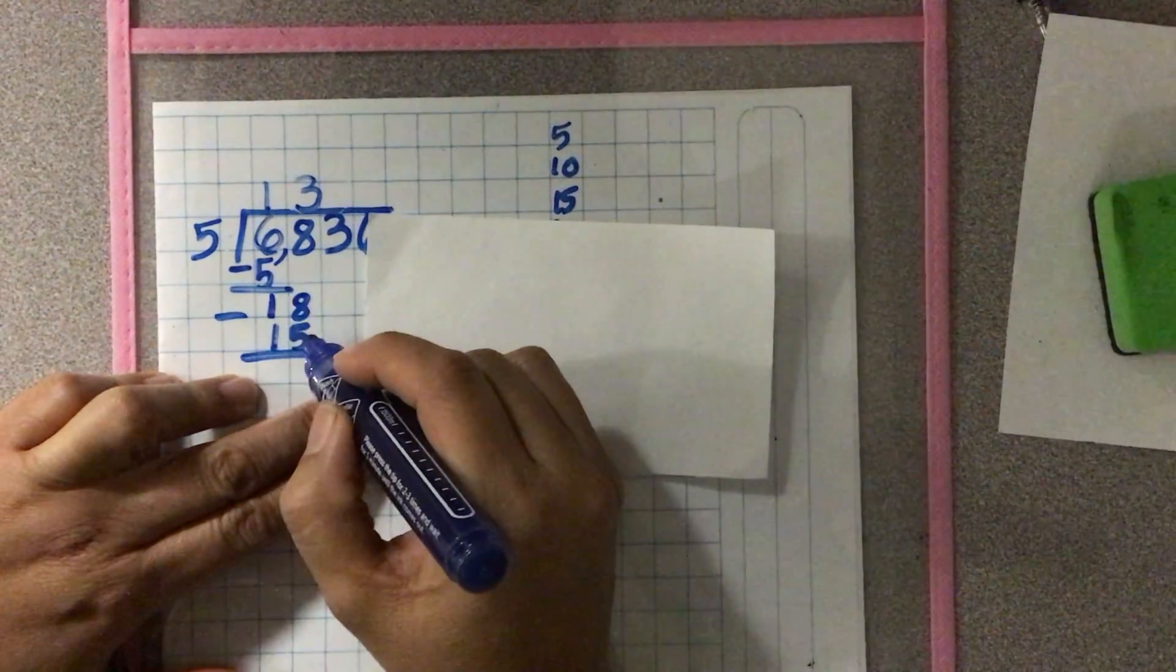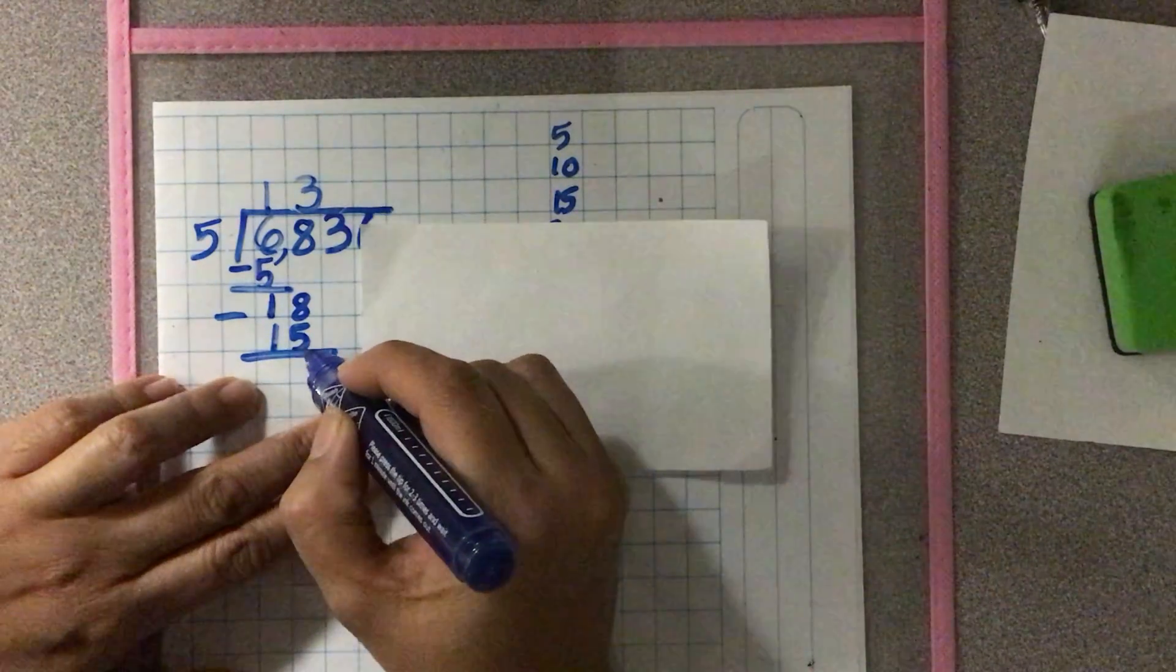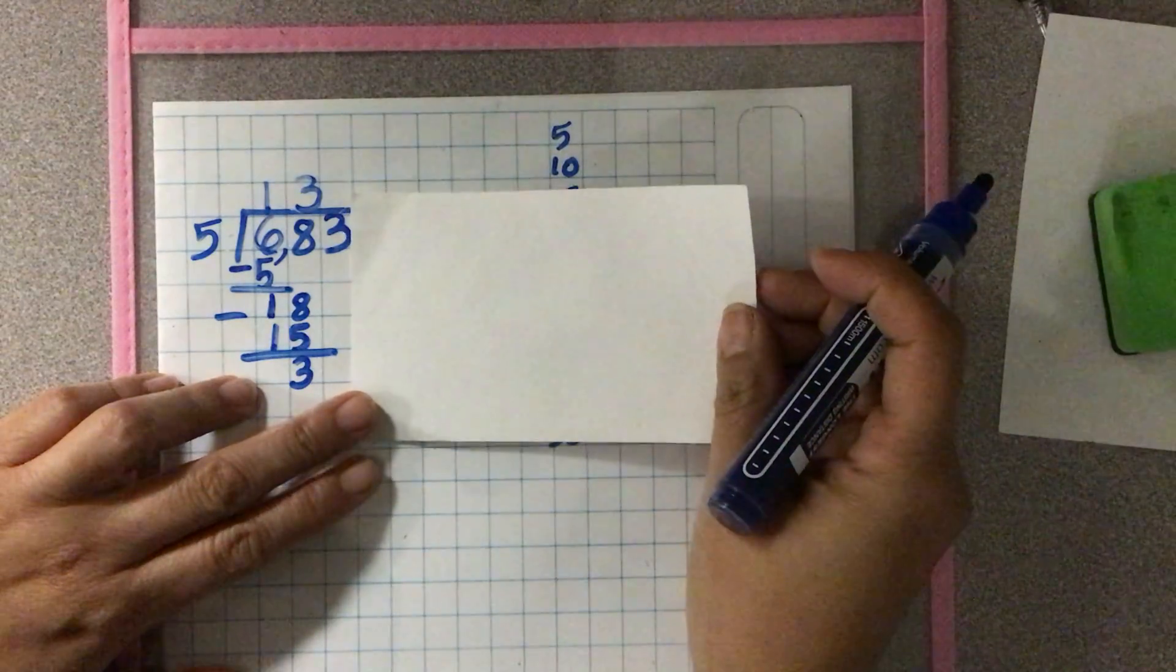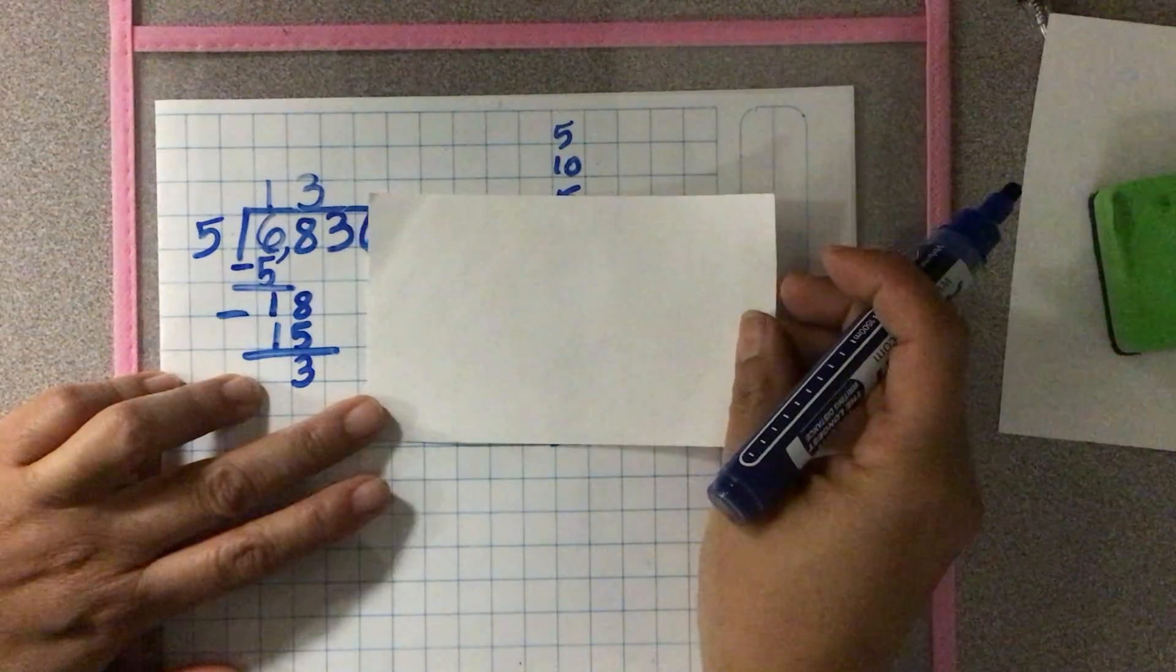I had 18, I used 15, and I still have 3 left. Now I go to the next digit.